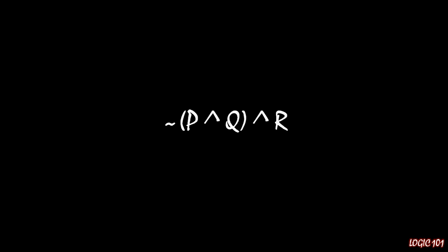In other words, can you easily tell me that this statement is true if P is true, Q is true, and R is true? What about if P is true, Q is true, and R is false? What about if P is true, Q is false, and R is true? What if P is true, Q is false, and R is false? What about the other four combinations?